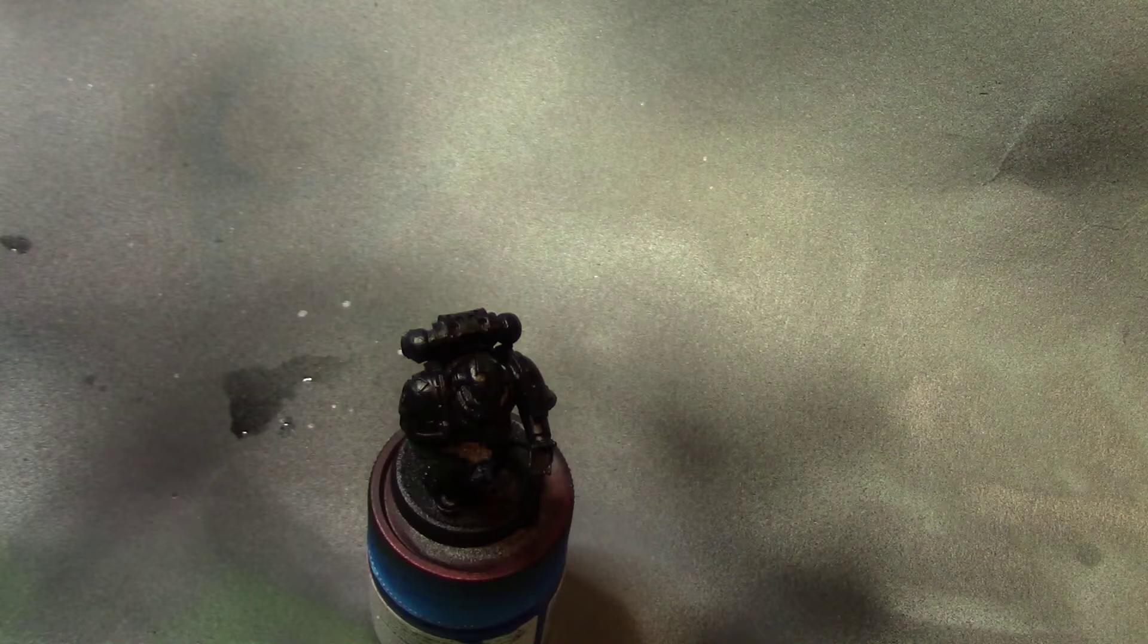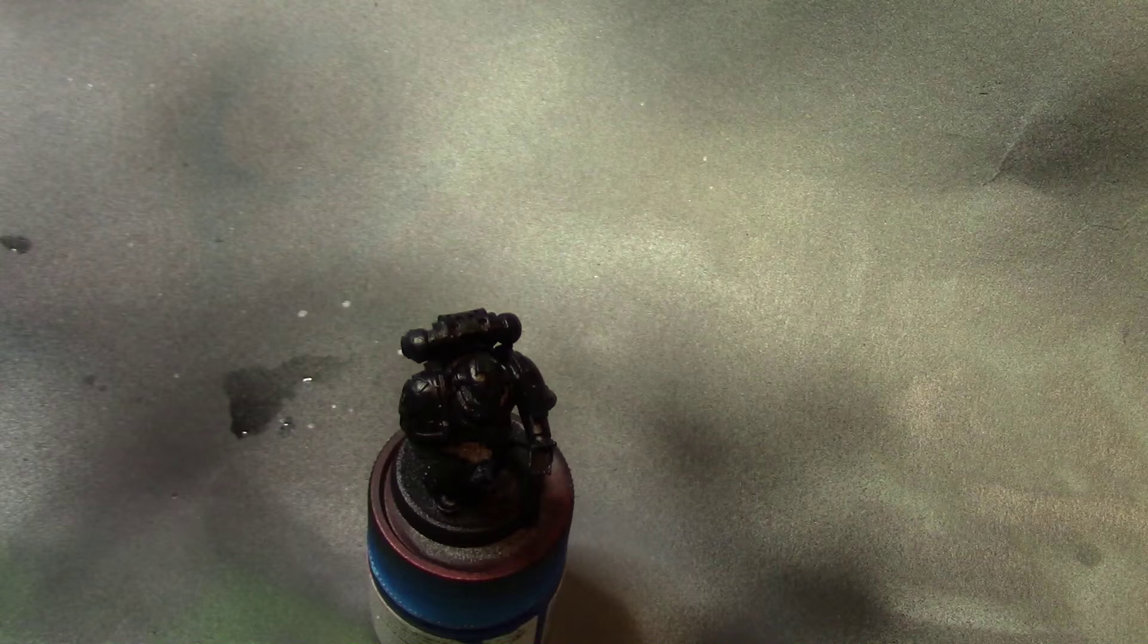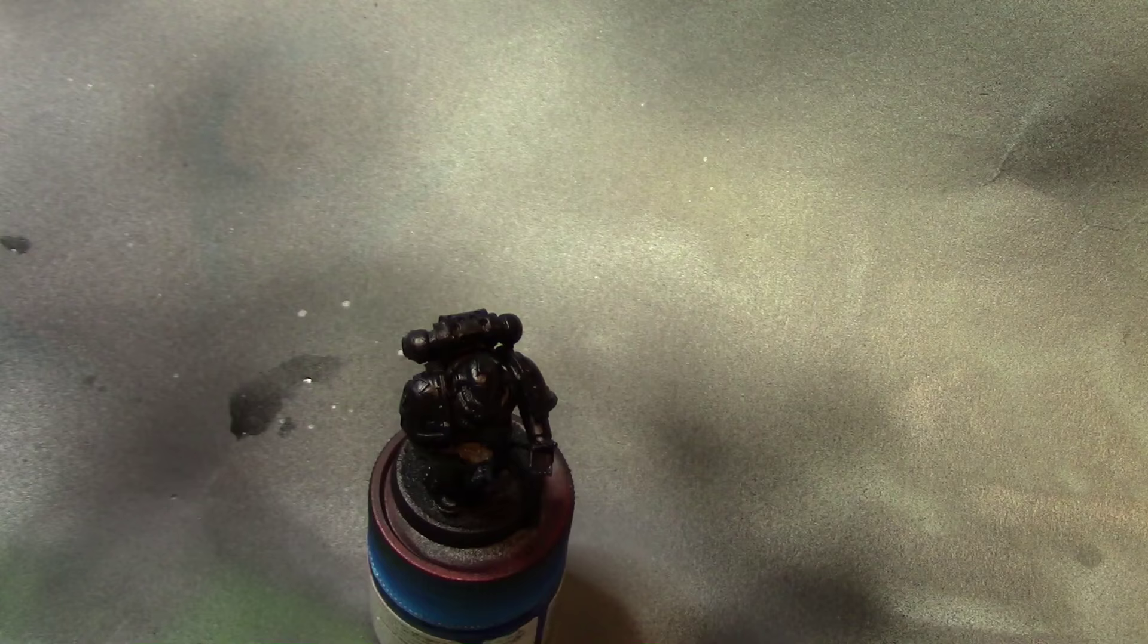So here it is. First off, you can see here I primed the model in black just to start off with. So I'm going to start off with Vallejo Premium Metallic Black and we're basically going to base coat this with the airbrush.